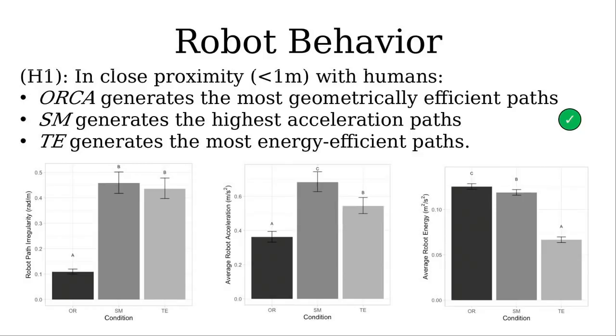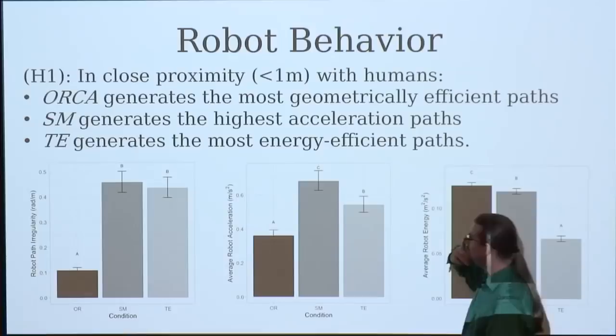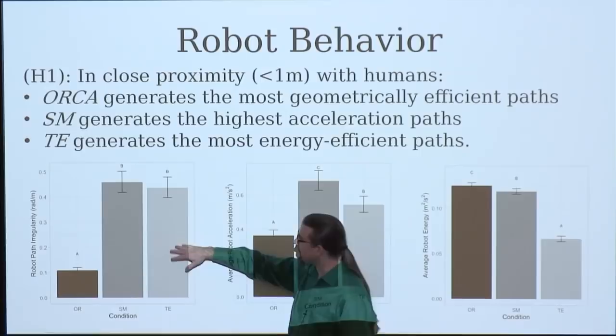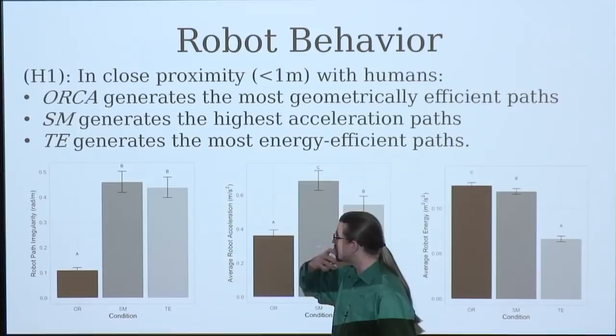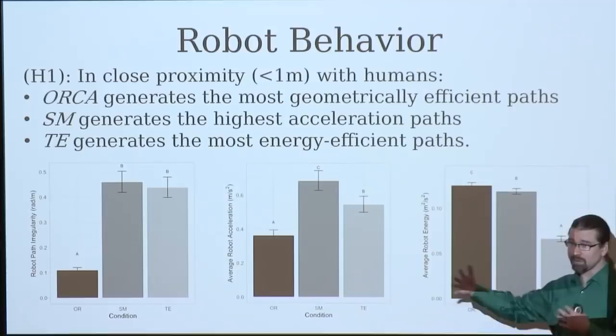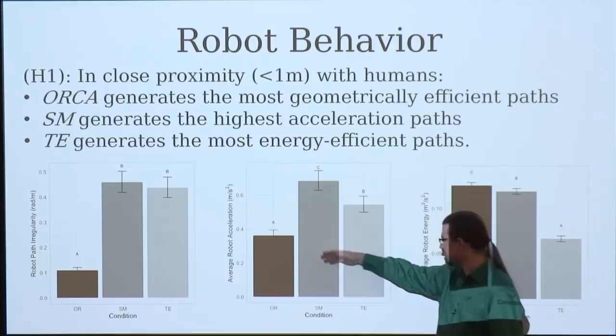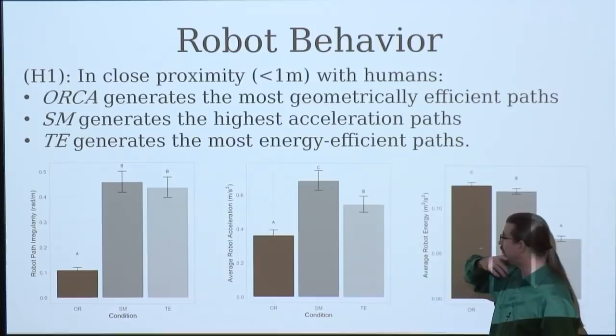So, let's look at our experimental results. So, hypothesis one was all of these quantitative numbers of robot performance. We see, firstly, path irregularity is a measure of how much did the path deviate from the shortest or in the start to goal distance. Just as we predicted, ORCA deviates much less than the other two. Interestingly, teleoperation and social momentum look very similar in terms of path irregularity. So, they're both deviating by the same amount. Second one is acceleration and here we see social momentum accelerates the most because it's going in these arcs. Teleoperation was a little bit less and then ORCA, but the least.